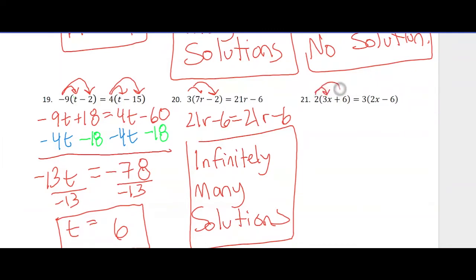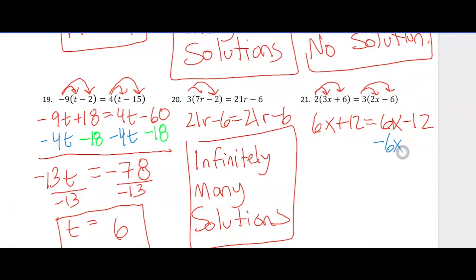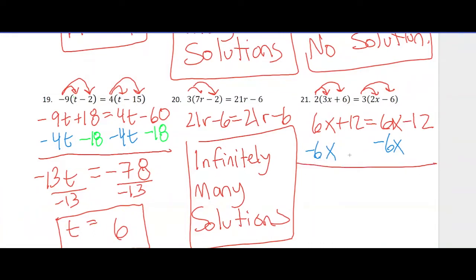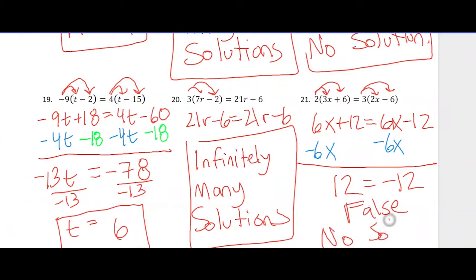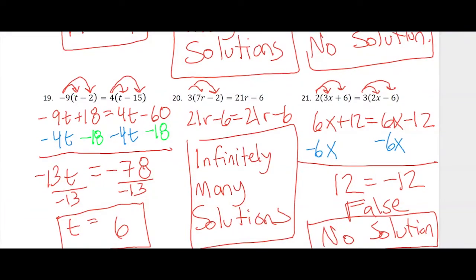Number 21 — we're going to start with the distributive property and get 6x plus 12 on one side and 6x minus 12 on the other. I'm going to subtract 6x on both sides, and what you'll notice is the variables all cancel out. I get a false statement, so there is no solution. Anytime all your variables cancel out: a true statement means infinitely many solutions; a false statement means no solution.